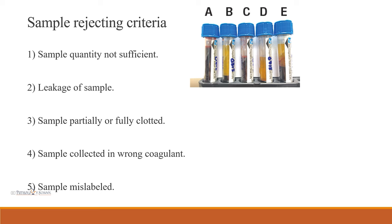There are various criteria for sample rejection. First, if the sample quality or quantity is not sufficient. Second, if there is leakage — if the container is soiled with blood, the sample can be rejected. Third, when the sample is partially or fully clotted, it cannot be run on the hematology analyzer. Fourth, if the sample is collected in the wrong anticoagulant it can be rejected. Finally, if the sample is mislabeled, it also has to be rejected.